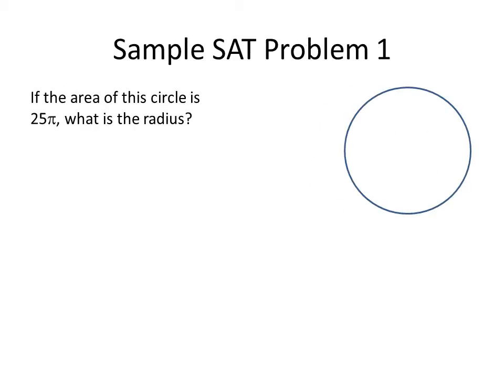Now we're going to do an SAT sample problem. If the area of a circle is 25 pi, what is the radius? The answer choices are 25, 5, 4, 16, and 6. Why don't you pause the recording now, go ahead and answer this, and come right back and we'll solve the problem.